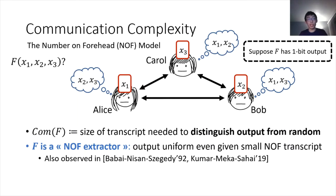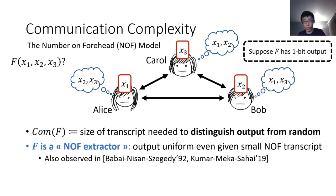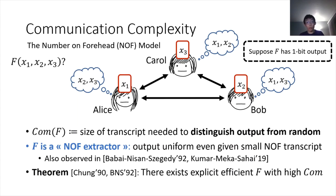This actually gives a connection with extractors. In particular, such a function F would be a number-on-forehead extractor, in the sense that the output of the function looks uniform even given the transcript in the number-on-forehead model, as long as the transcript is smaller than the communication complexity of F. This is an observation that has already been made before, and we also know how to build efficient functions F with high communication complexity.